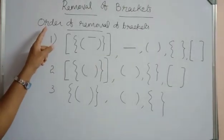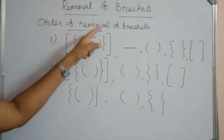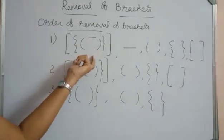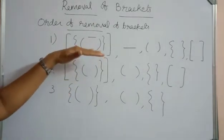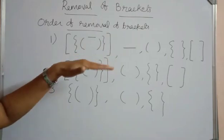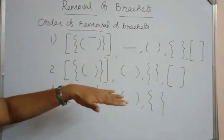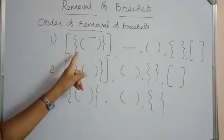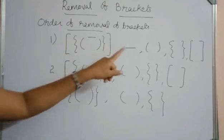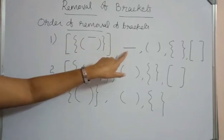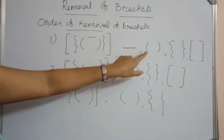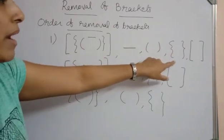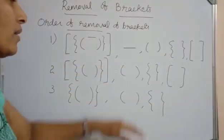Now let's see the order of removal of brackets. Whenever these brackets are used, we need to know in what order to remove them. If all four brackets appear together in a single expression, first we remove the vinculum, then the small bracket, then the curly bracket, and last the square bracket.